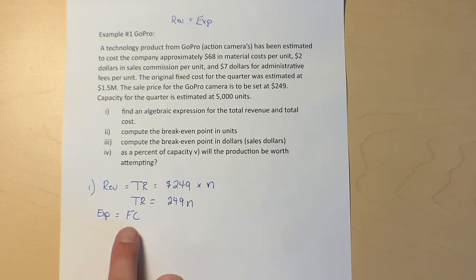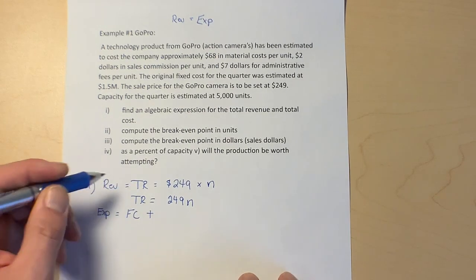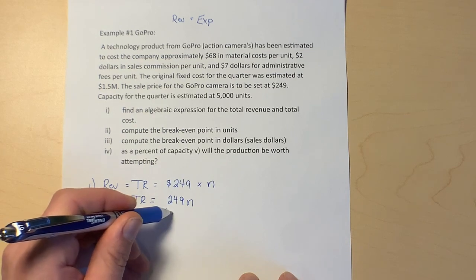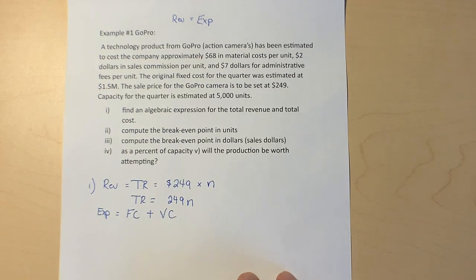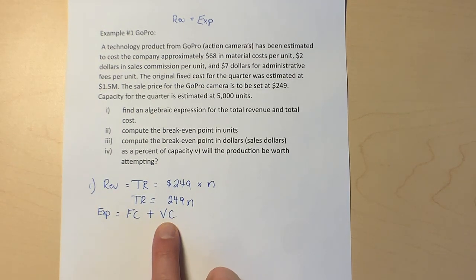Those expenses are those fixed costs. Then there are costs that come with every unit that we sell, and we call those variable costs or VC.